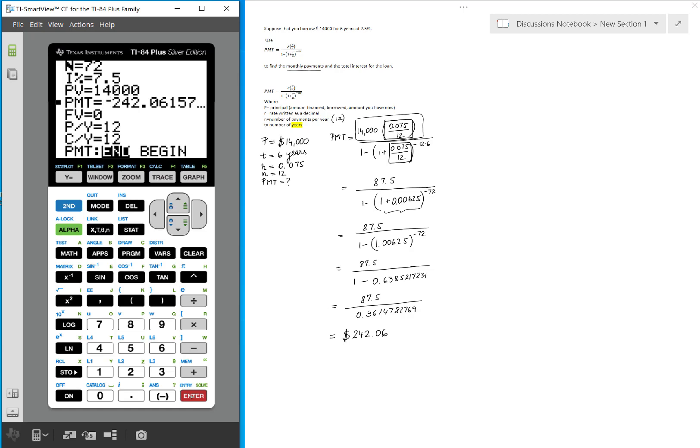Now the other question was the total interest for the loan. So we borrow $14,000. Right? So this is how much money we borrow.